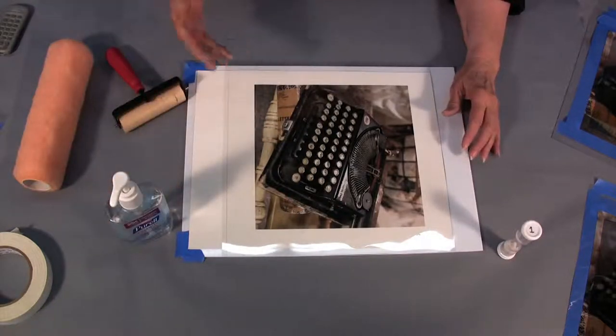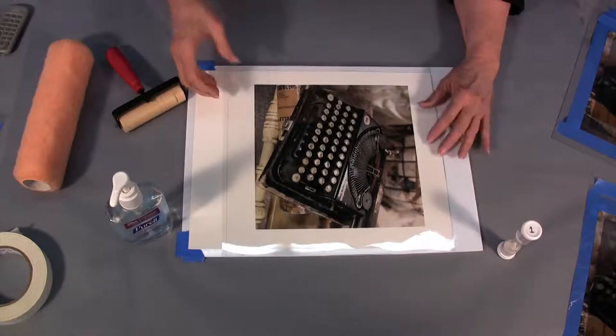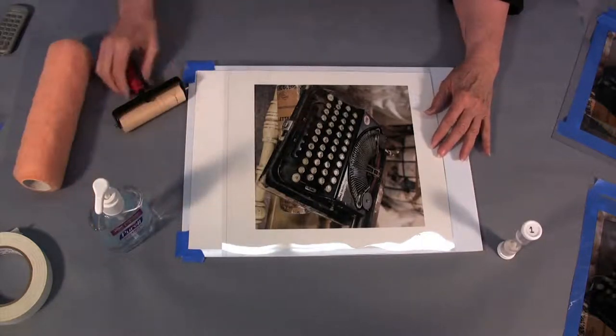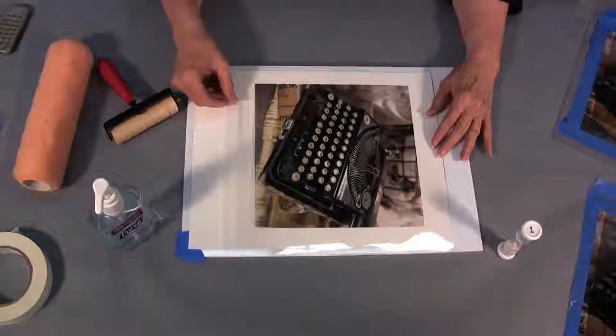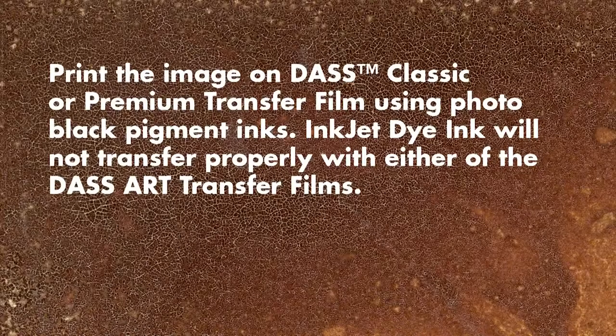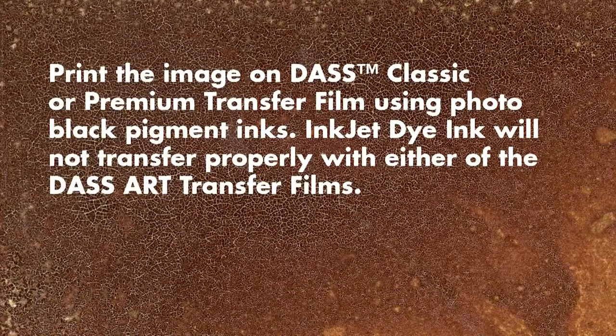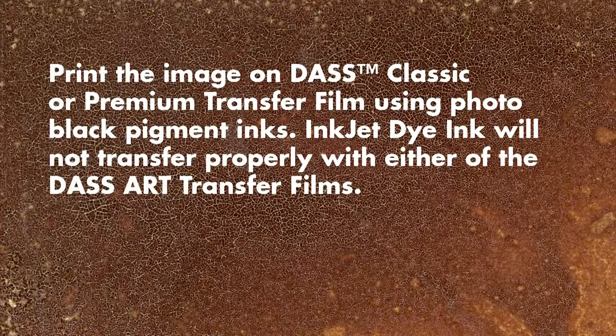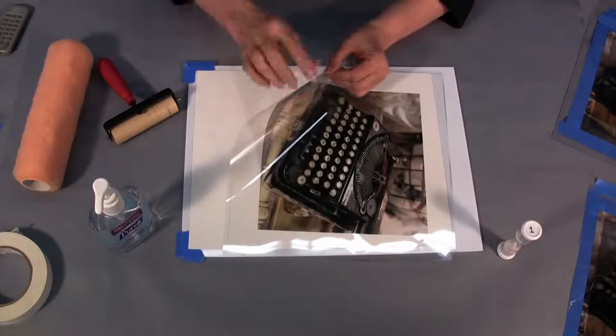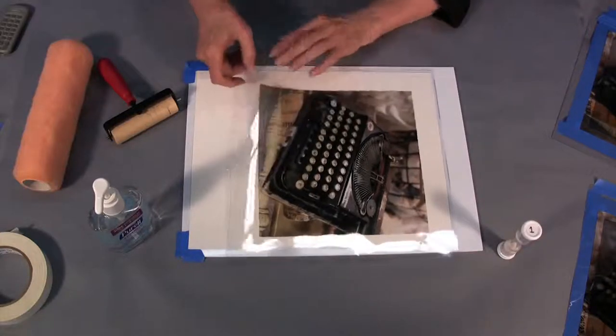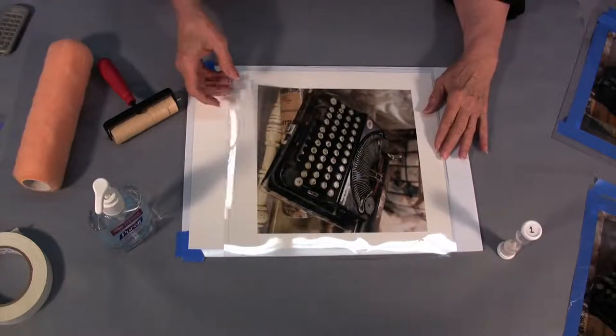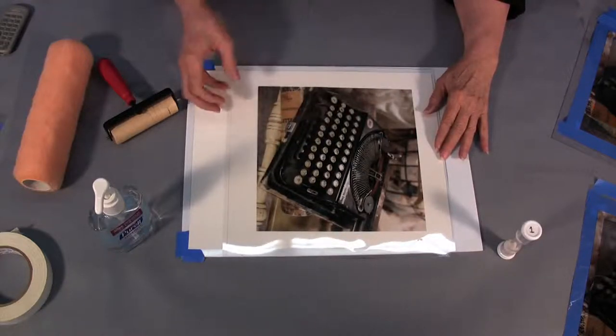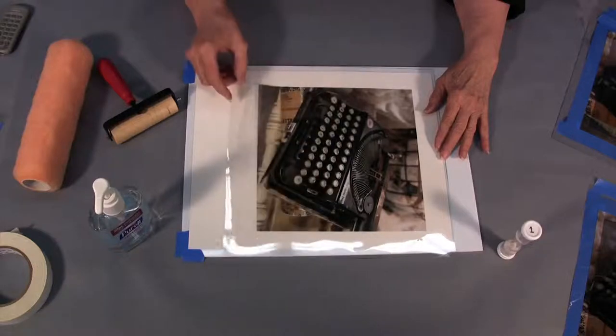It's available on Amazon in half gallon bottles if you're doing classroom work. You'll need to gather up a few items to do this. One is an image printed on the DAS film and I'm using the classic film. When you print on the film touch both sides with a damp finger, print on the sticky side. Sometimes people make a mistake and they'll print on the other side and then the ink runs all over. So be sure that you print on the side that feels sticky to a damp finger.